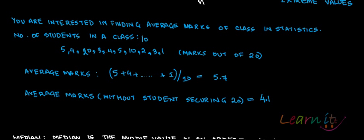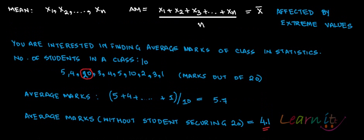But what is the highest mark? 20 is the highest mark. So if you remove that, what you get is 37 divided by 9, which means 4.1. Now have you seen this? The mean is highly affected by extreme values. There is one extreme value here — 20 — and this is the reason the average has gone up. Otherwise the average was just 4.1. Only one person is getting 20, and because of that the average has gone up from 4.1 to 5.7. So this is the problem of mean: mean is affected by extreme values.